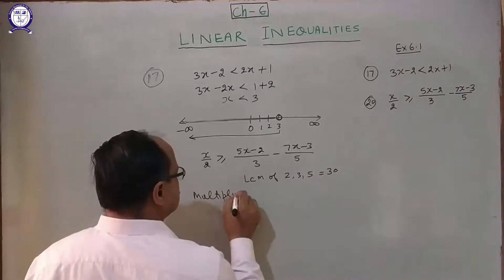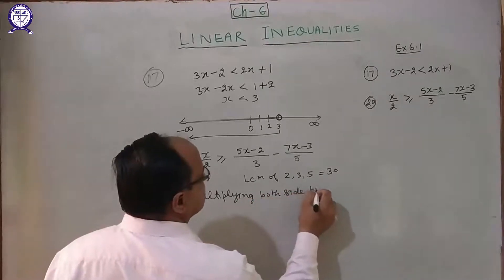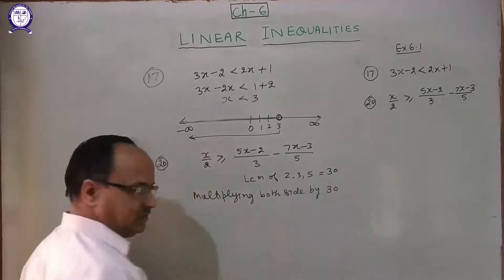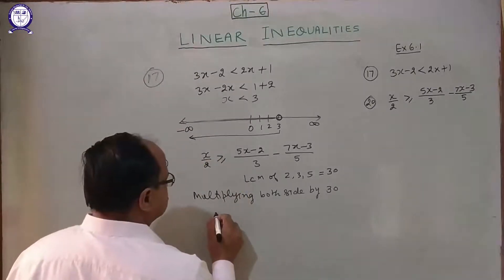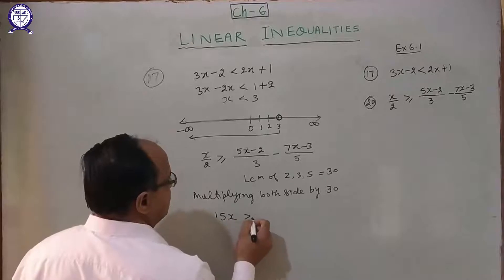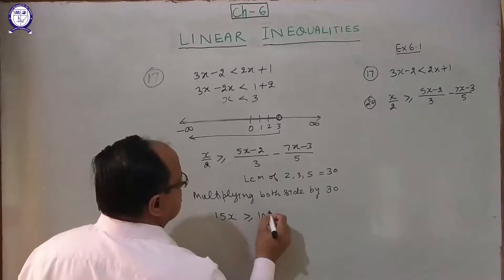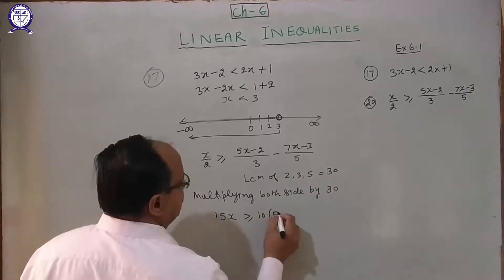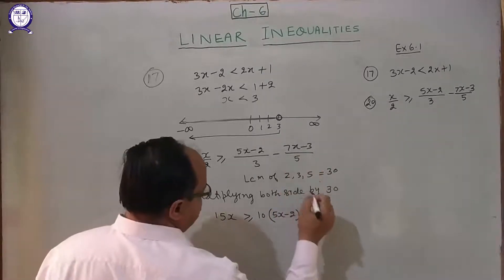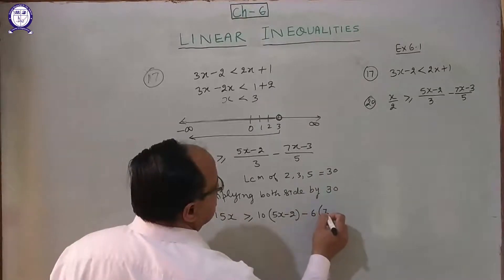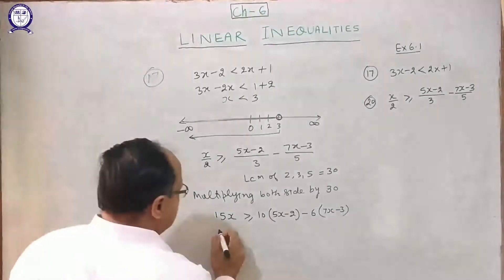Multiplying both sides by 30: when you multiply x/2 by 30 it becomes 15x, greater than or equal to. When you multiply (x minus 2)/3 by 30 it becomes 10(x minus 2), which is 10x minus 20. When you multiply (7x minus 3)/5 by 30 it becomes 6(7x minus 3).